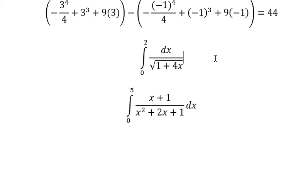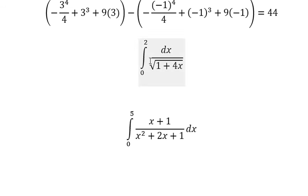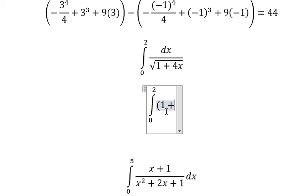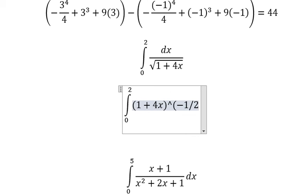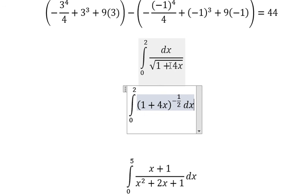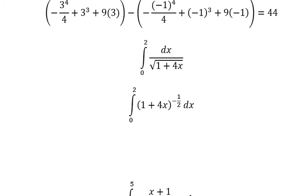Question number 3. In this situation, we can write into 1 plus 4x to the bound of negative 1 over 2, dx, because the square root is about 1 over 2. This is the denominator, that's why you got bound negative. And we got a final answer.